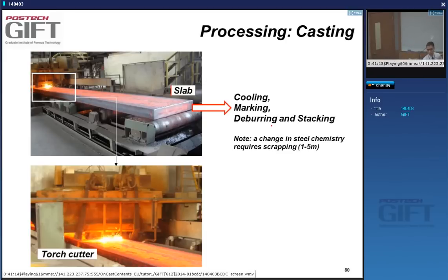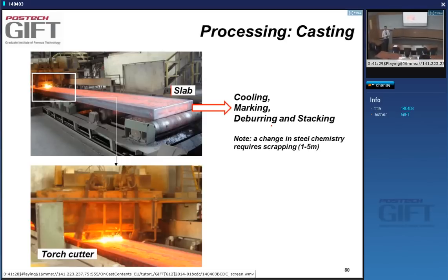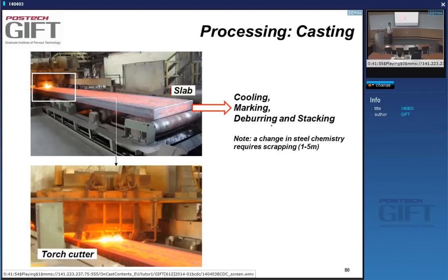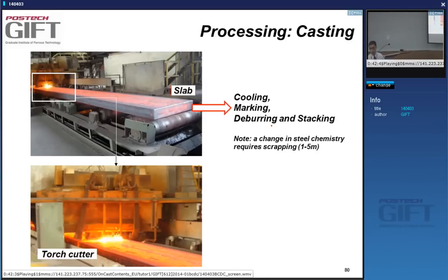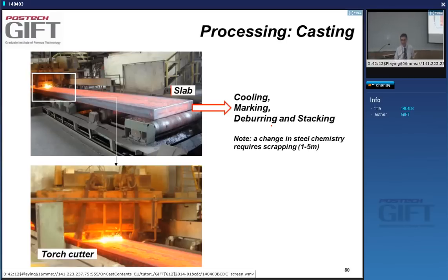Because this process is endless, you basically have to produce the same thing all the time. So how do you make different compositions? When you want to change from a low carbon steel to a micro-alloyed steel, you have to make transition slabs — you have to cast slabs that go from the previous chemistry to the next chemistry, which means wasting material. Depending on how good you are and what the product is, you may have to scrap a few slabs or a few meters of material. A few meters can mean quite a few tons of steel. So as a young researcher visiting a steel plant, you cannot ask them to make something for you just like that — normal production is all programmed.